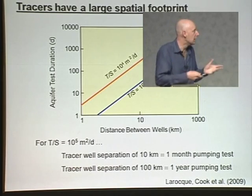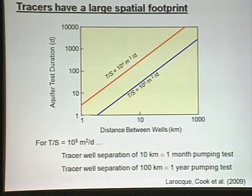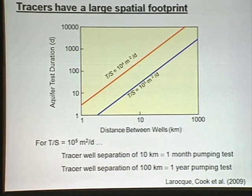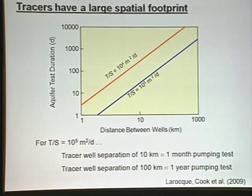We did some modelling on that recently — Marie LaRock and myself — to quantify that effect. It varies with the hydraulics of the aquifer, but for a T/S of about 10⁵ metres squared per day, if we have two wells separated by 10 kilometres, we're sampling the same amount of aquifer that you would sample in a one-month pumping test. If the two wells are 100 kilometres apart, we're sampling the equivalent of a one-year pumping test. A potential advantage of tracers in heterogeneous systems is that they sample a large part of the aquifer system.